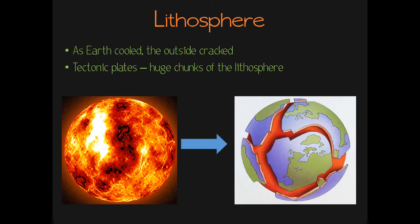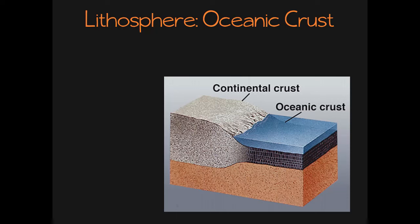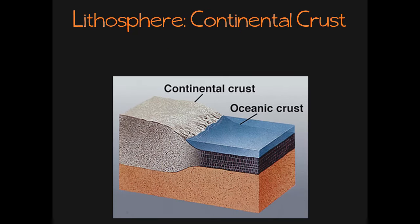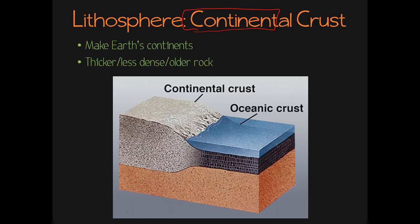The lithosphere contains two types of crust. We learned that the oceanic crust is the crust that holds the ocean on top of it. This type of crust is very thin, very heavy, very dense rock, and it is also Earth's newest rock. In fact, oceanic crust is being made now — it's constantly being made, and we'll learn more about that later. Continental crust is the crust that makes up Earth's continents. This rock is going to be much thicker, but it's also less dense, and it is also much, much older — some of Earth's oldest crust.